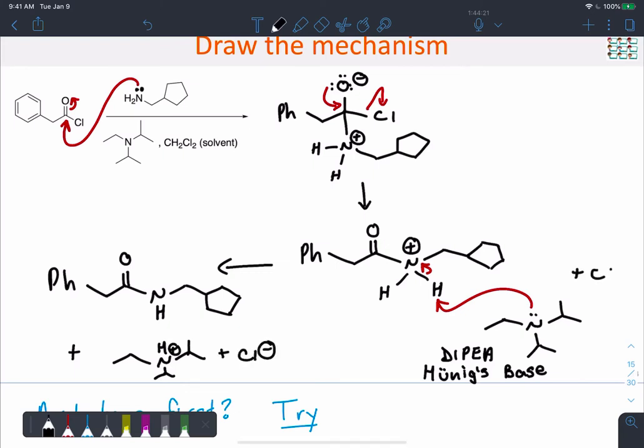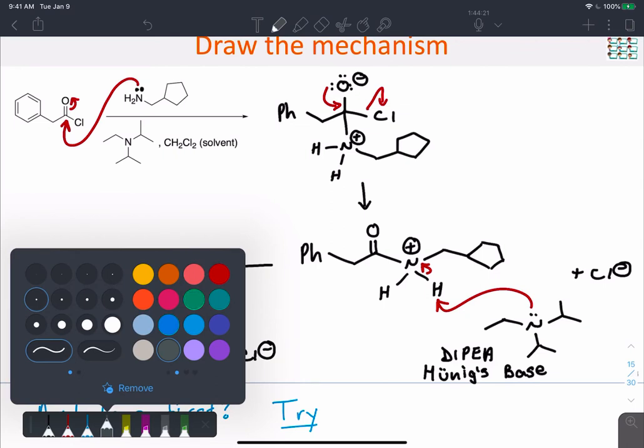I'm going to balance that equation, there we go. A couple people had asked in class if the acid-base step could have happened first instead of the collapse of the tetrahedral intermediate. So yeah, that's another possible way.